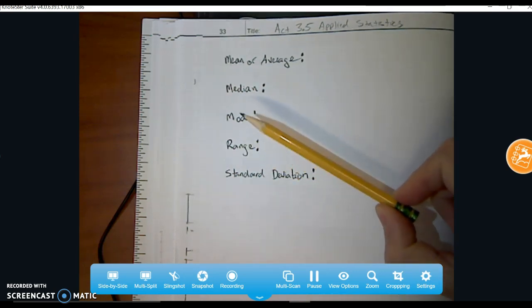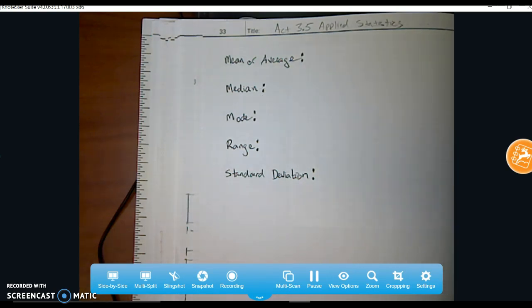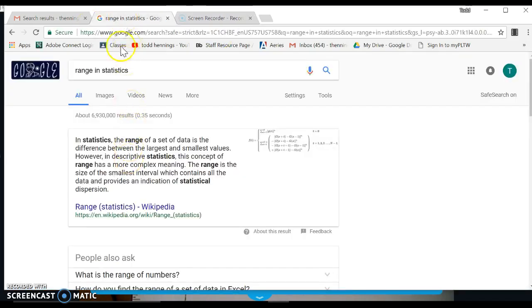Some of these words like range and mean or average, if you just Google those words, you're going to get all sorts of meaning. Are we talking about an oven range, a range where cattle roam? What are we talking about? So one of the things you're going to want to do then is put range in statistics.